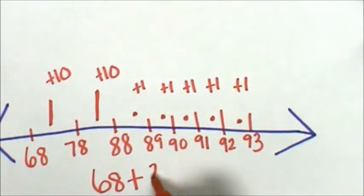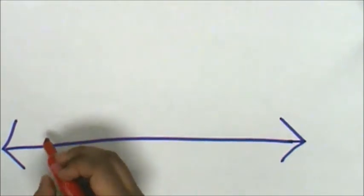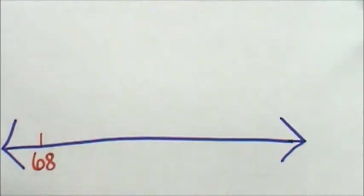68 plus 10, 20, 25 equals 93. Let's try the problem again and this time we're using an abstract representation. Jessica had 68 stickers. Her friend gave her 25 more.